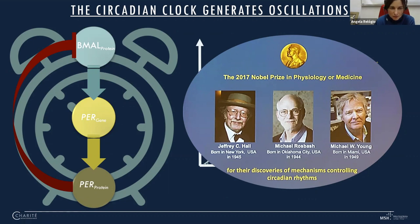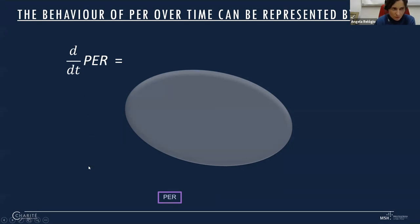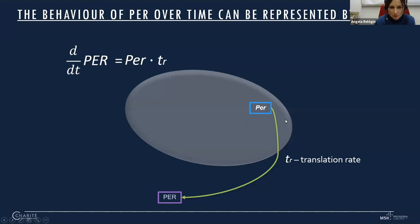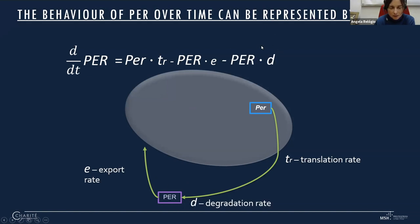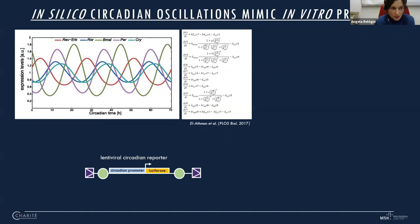So everything is rather recent — not the mechanism itself, but the recognition that it's important. If we try to represent the behavior of PER over time mathematically: the variation of PER in time depends positively on the amount of PER translated, negatively on the amount of PER going to the nucleus, and negatively on PER being degraded. With this, I have the equation for PER. We can do something similar for the entire network, and this kind of mathematical model of differential equations produces sustained oscillations with the rhythms and phases we wish to see.